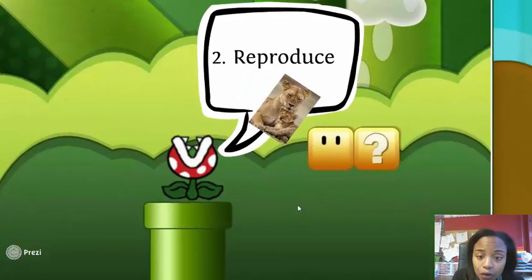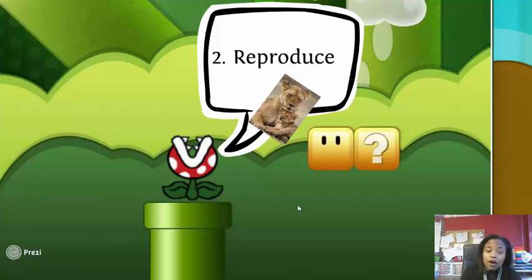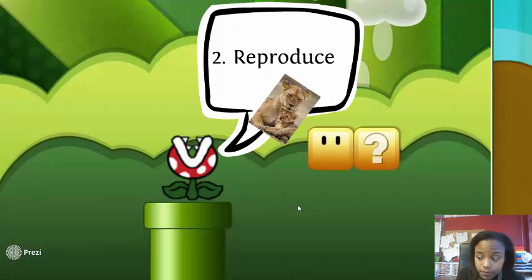The second thing an organism must be able to do is reproduce. You and I just didn't pop up out of nowhere — we came from two parents. For number two, write the word reproduce. Make sure you pause it.